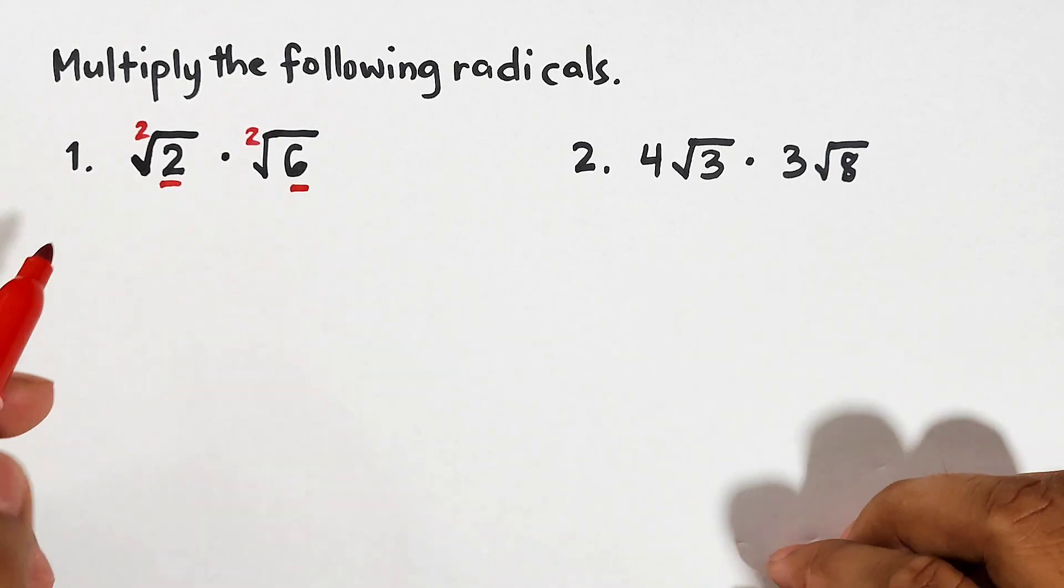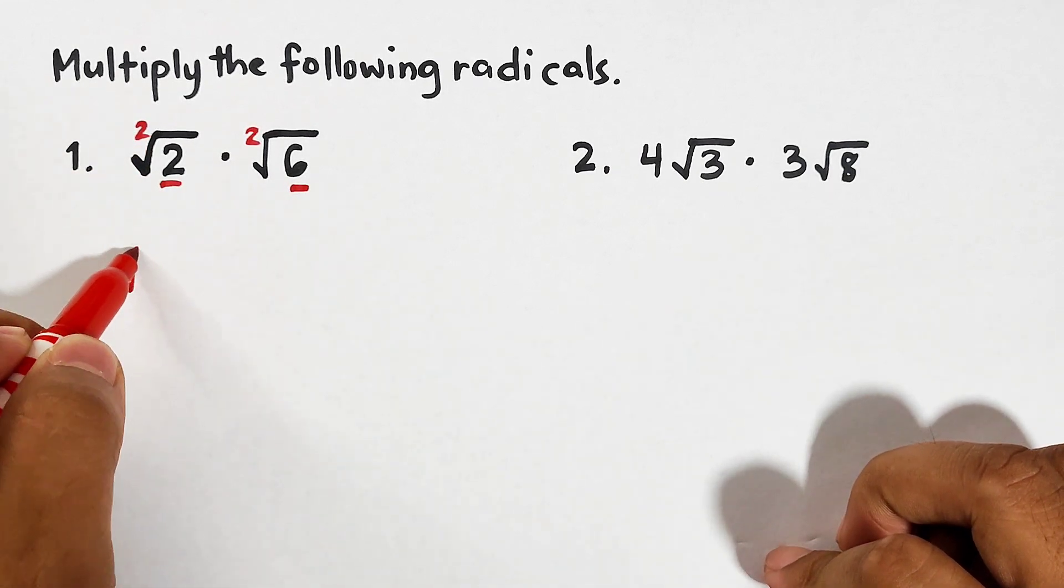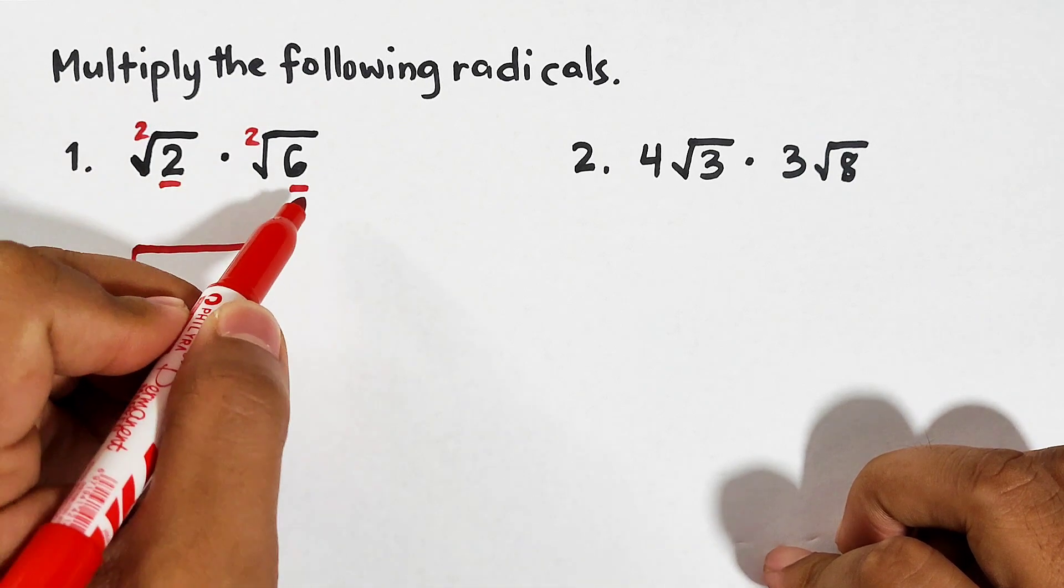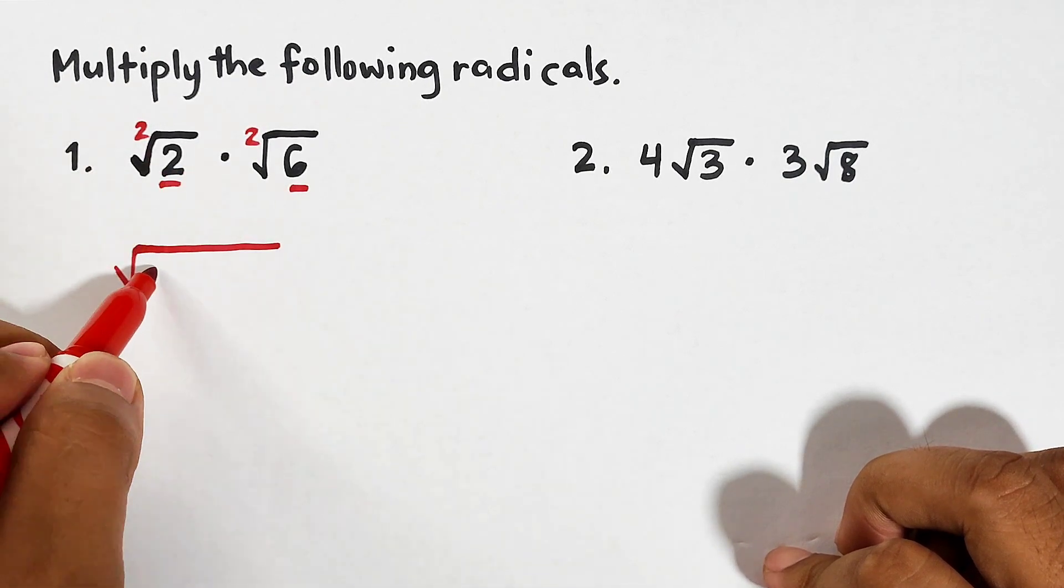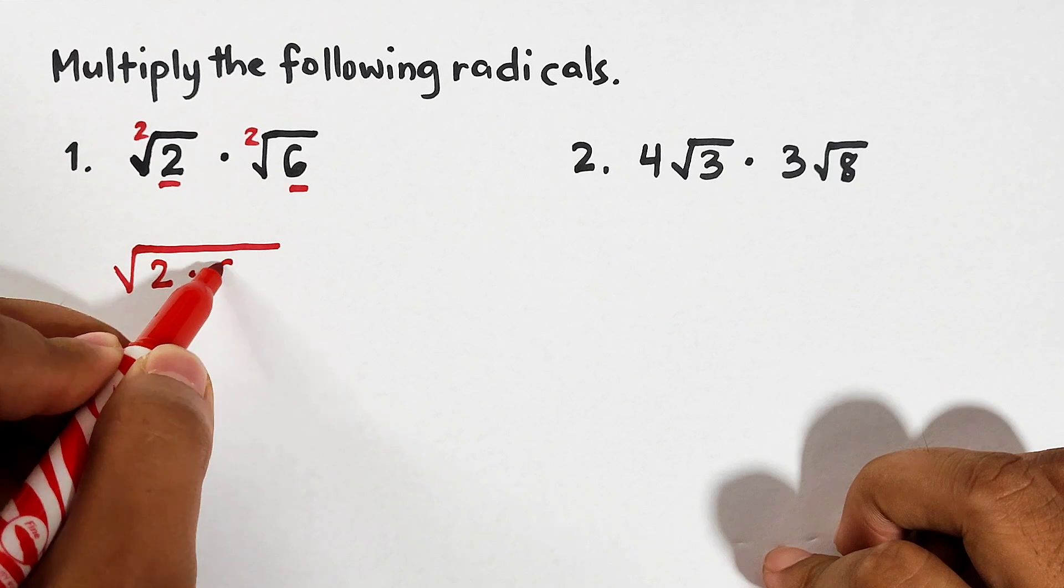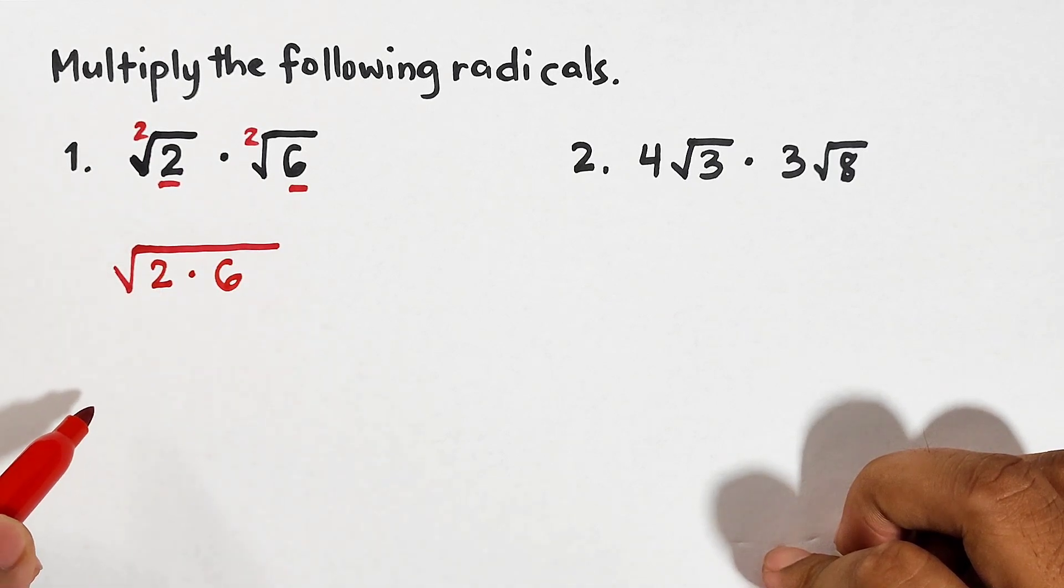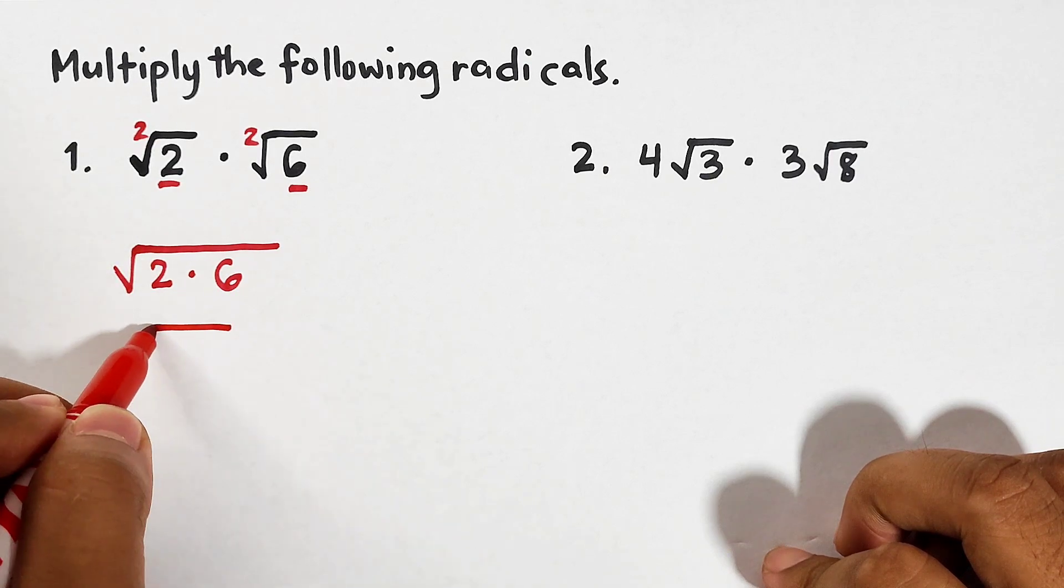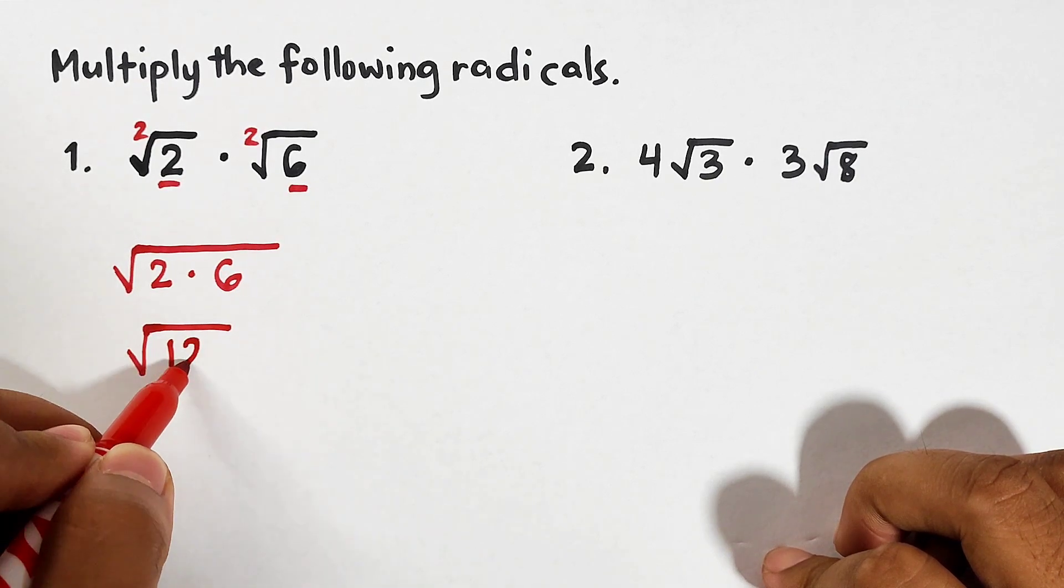Since they are the same, we can simply multiply or combine their radicands. And it goes like this: we will copy the same radical, then multiply the radicands just like this, 2 times 6. And now multiply 2 and 6. The answer is simply the square root of 12.